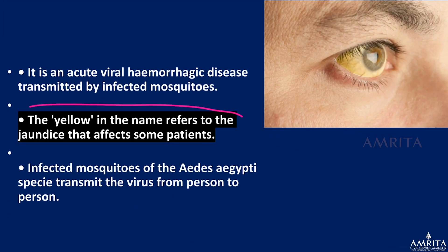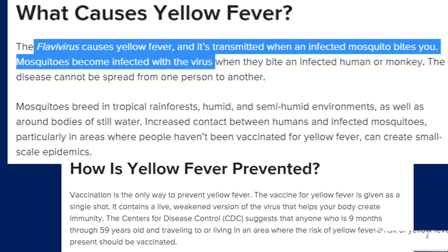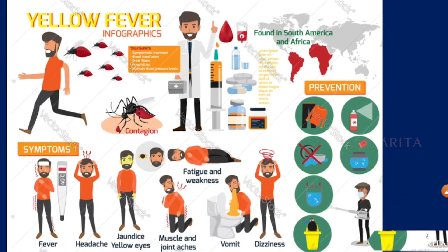Yellow fever is called 'yellow' because it causes yellowness in the eyes, similar to jaundice. It is another vector-borne disease. Importantly, a vaccine is available for yellow fever — vaccination is the only way to prevent it. Yellow fever is not very relevant for India since it affects mostly countries in South America and Africa, so exam questions focus more on dengue and chikungunya.